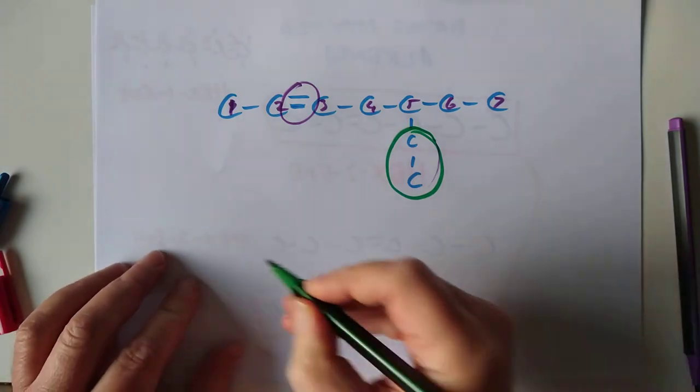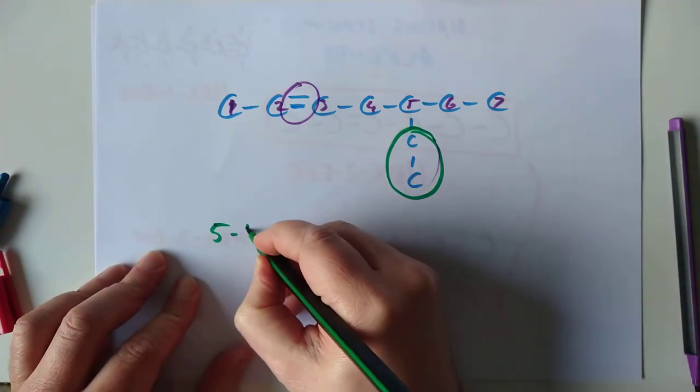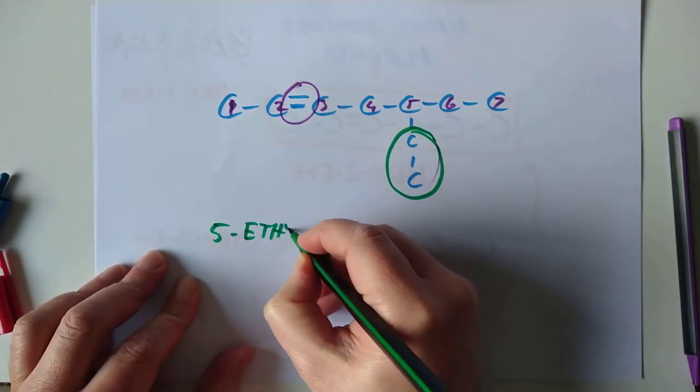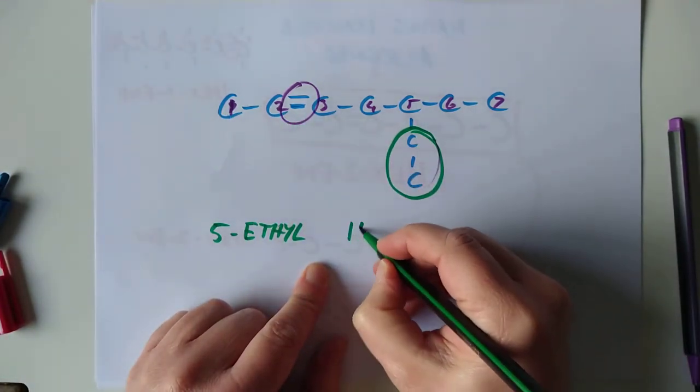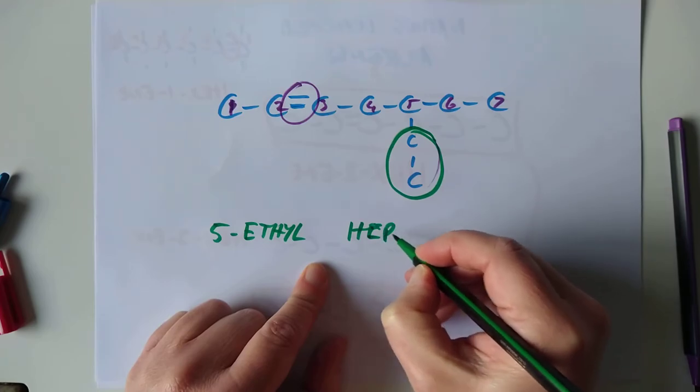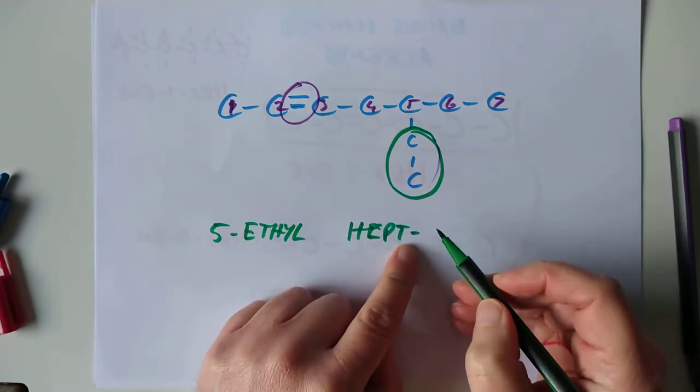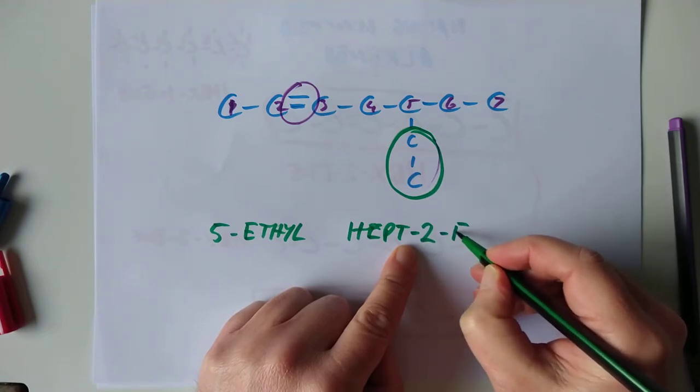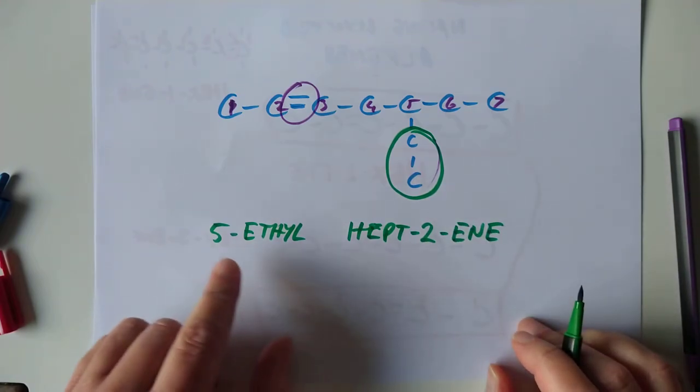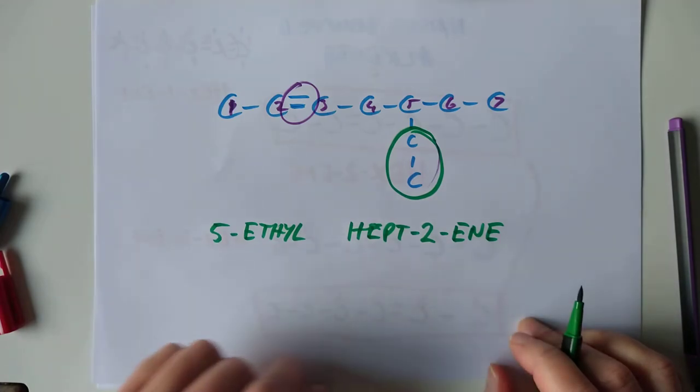So the full name of this molecule is 5-ethyl. And 1, 2, 3, 4, 5, 6, so that's hept. And then we show the position the double bond starts at, which is carbon 2. And it's hept-2-ene. Slight mouthful there. 5-ethyl hept-2-ene.